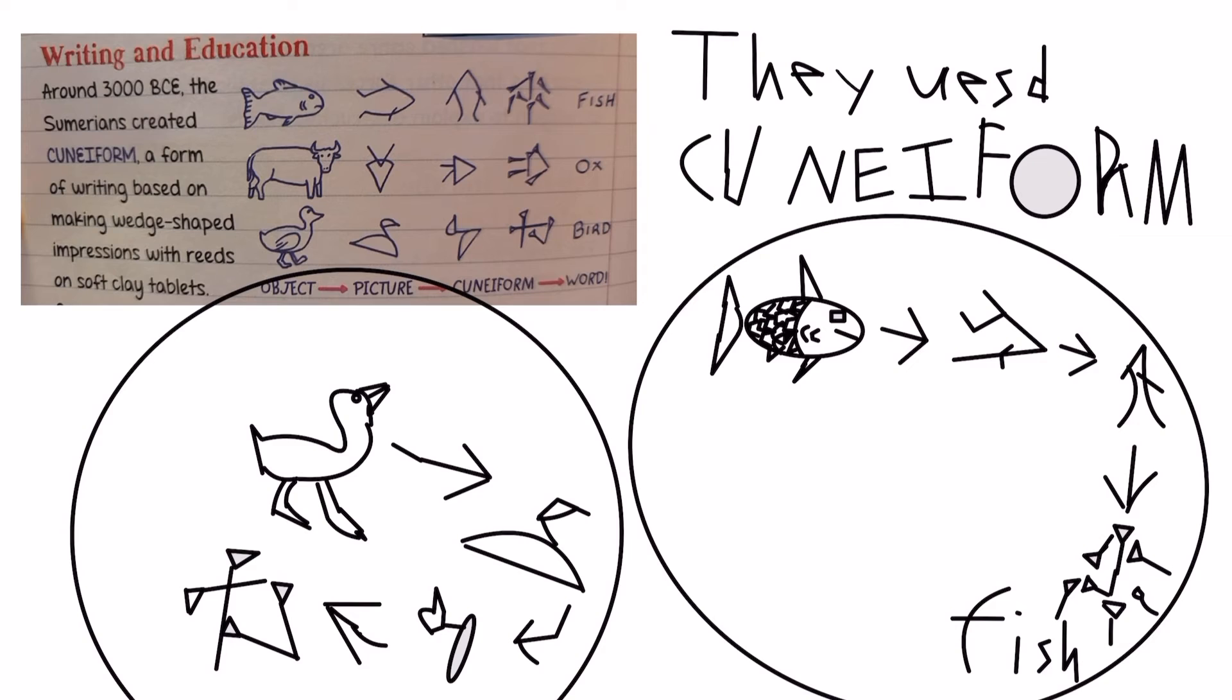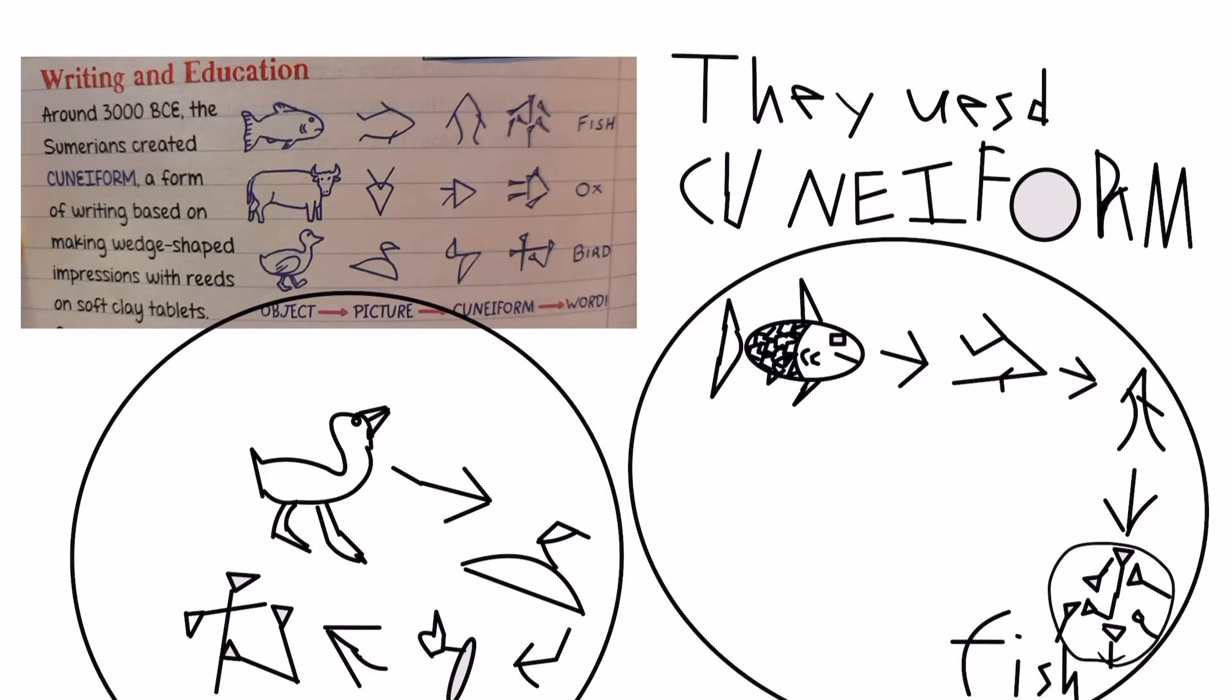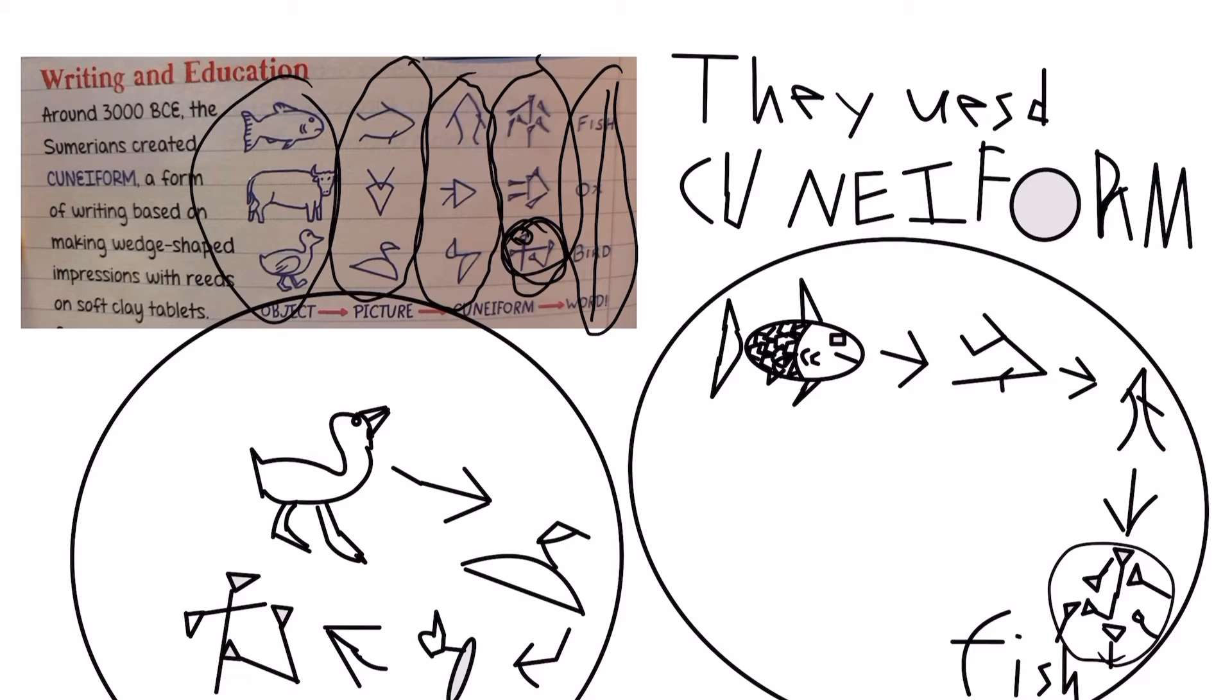And they used cuneiform. So cuneiform, so you can see the symbols like this. That is the cuneiform and these are the words. So they first start with the object. They draw it all the time. And then it became a picture. And then it became, I think, upgraded picture. And then it became a cuneiform. And then it became a word.